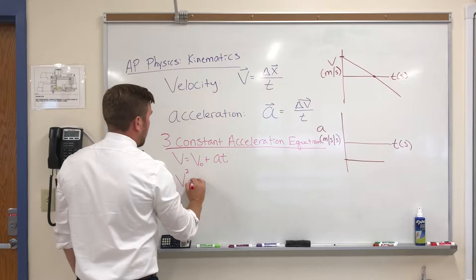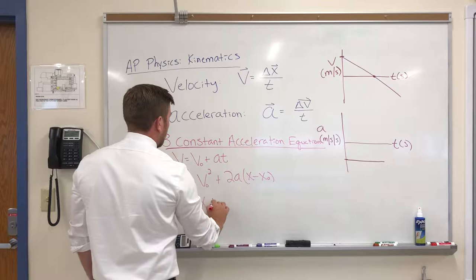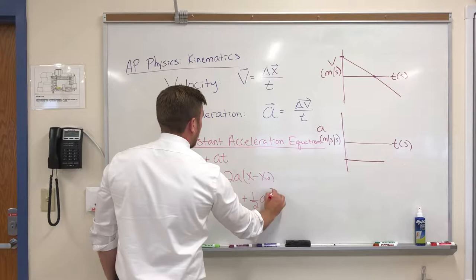So our constant acceleration equations. V equals V0 plus AT. V squared equals V0 squared plus 2A times X minus X0. And finally, X equals X0 plus V0T plus 1/2 AT squared.